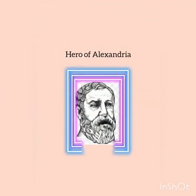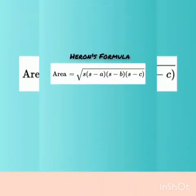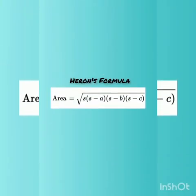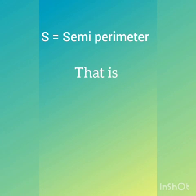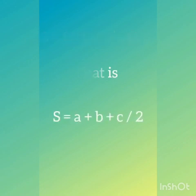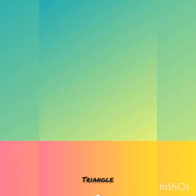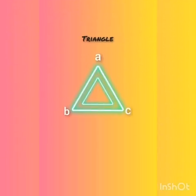Therefore, Hero of Alexandria created the formula known as Heron's formula, which is: Area equals under root of s into (s minus a) into (s minus b) into (s minus c), where s equals the semi-perimeter, that is (a plus b plus c) divided by 2, and a, b, c are the sides of the triangle.